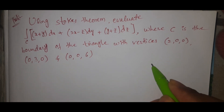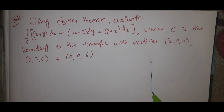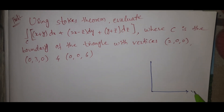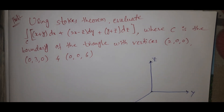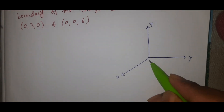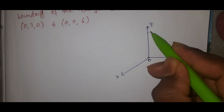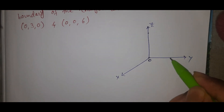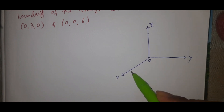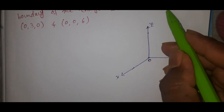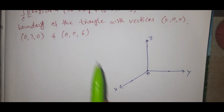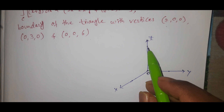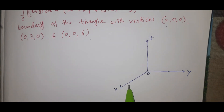Now see here — the triangle is plotted with the y-axis, z-axis, and x-axis. The origin point is here. The point on the z-axis is 6, on the y-axis is 3, and on the x-axis is 2. On the z-axis, x and y are 0; on the y-axis, x and z are 0; and on the x-axis, y and z are 0.